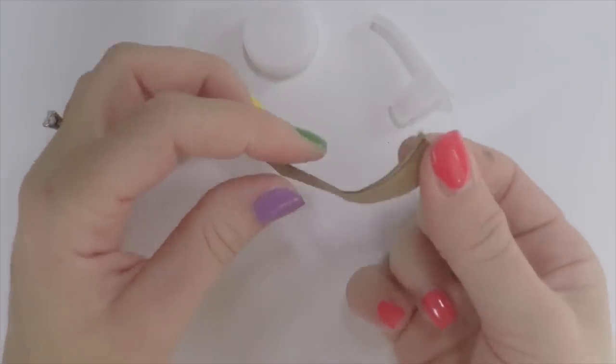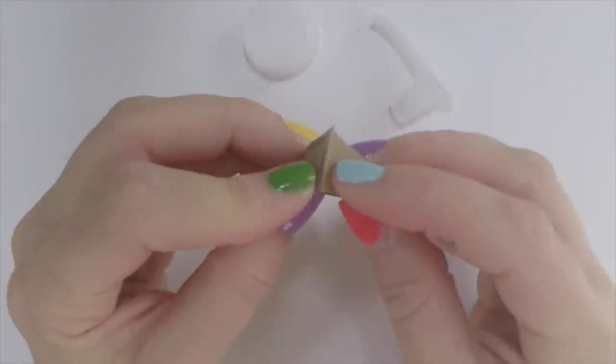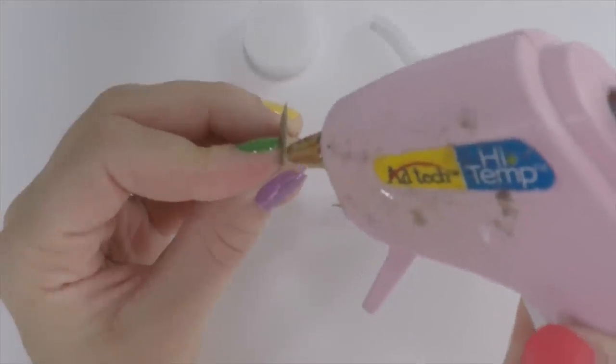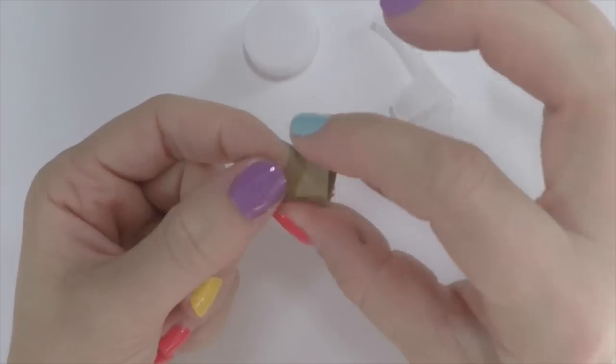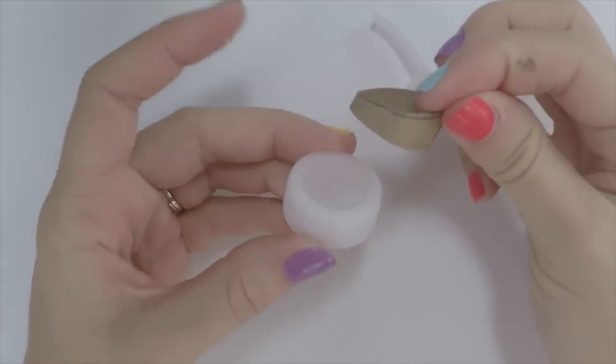You're gonna curl it with your fingers and then glue it together. This is the lip of the coffee pot. This is gonna sit right on top of your water bottle lid, and you're just gonna hot glue it into place.